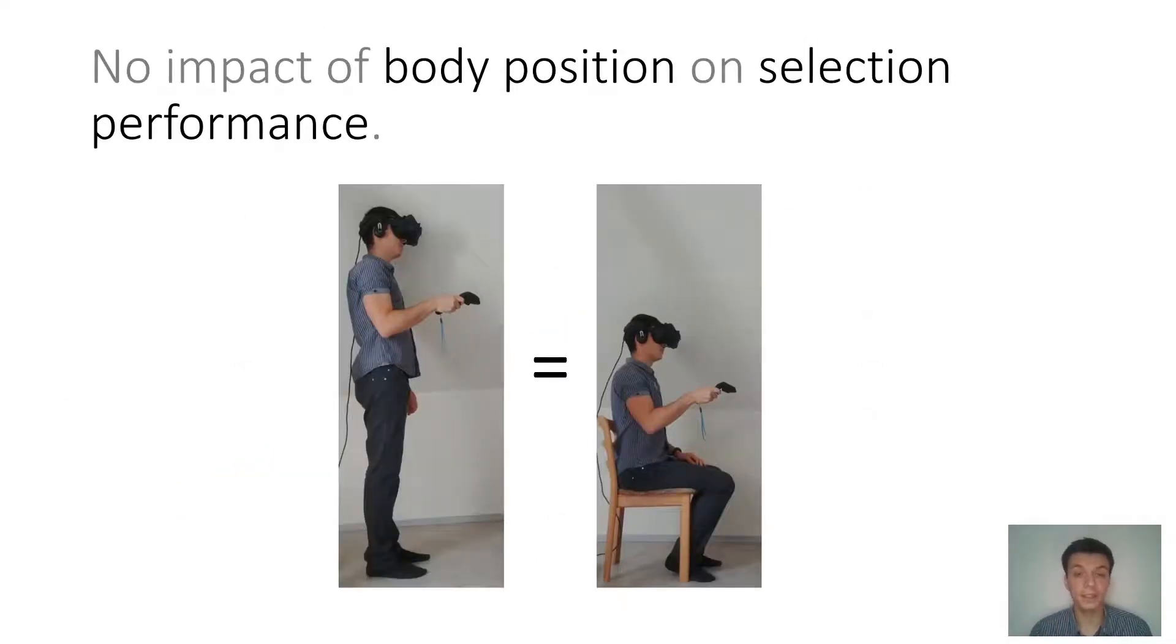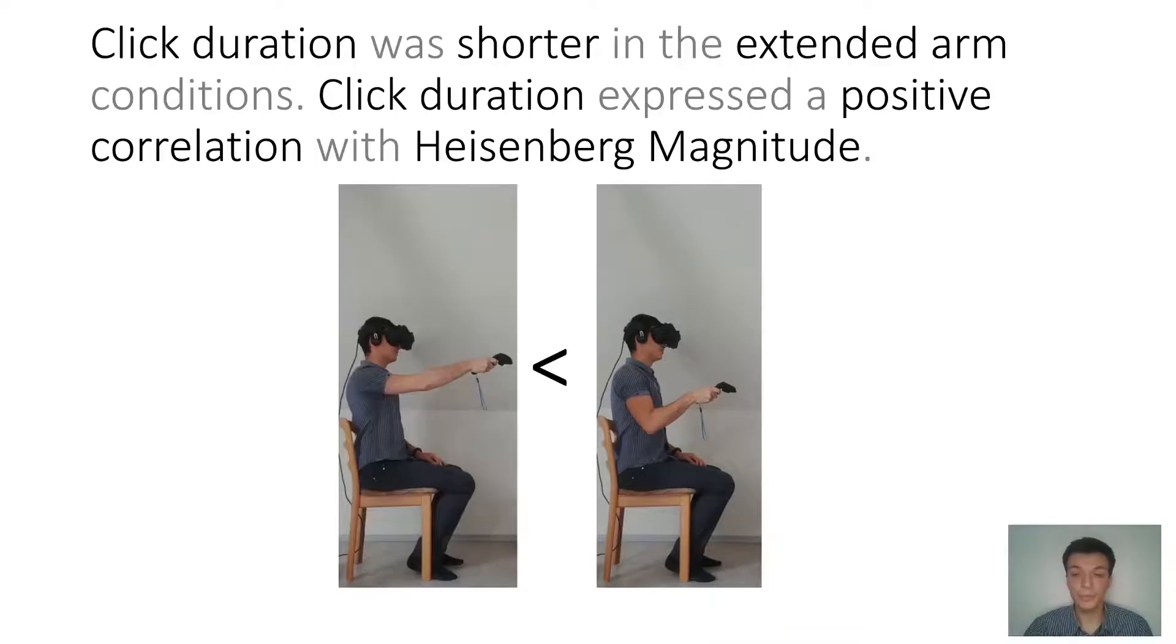We didn't find any significant difference for body posture. So standing or sitting didn't obviously affect the selecting arm. We did find a difference in the click duration for the arm posture. An extended arm led to shorter click duration, which might be due to the tension in the muscles. And we also found that click duration was correlating with Heisenberg magnitude. A longer click would lead to a higher angular displacement.